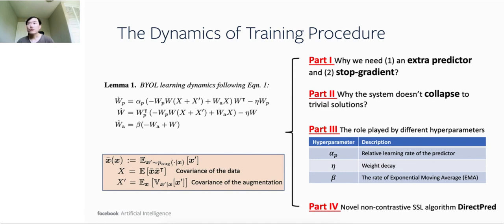For such a simple model, its dynamics can be written down in closed form. Here, Σ and Σ' are two positive semi-definite matrices that represent the covariance of the data and the mean covariance of the augmentation. Surprisingly, with such a simple model, we are able to explain a lot of things, such as why the extra predictor and the stop gradient are needed, why the system does not collapse to trivial solutions during training, and the roles played by multiple hyperparameters, including relative learning rate of the predictor, weight decay, and exponential moving average.